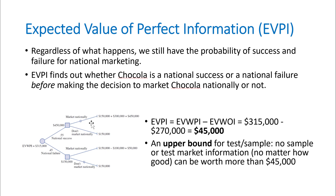Using the backward method on this tree, we take the larger value at each decision node. We get the expected value across both branches and call that the Expected Value With Perfect Information, or EVWPI. Subtracting EVWOI gives us $45,000 — that's EVPI. This means $45,000 is the maximum we would ever pay for any test market, even one giving us perfect information about what's going to happen. No test market information is worth more than $45,000, making EVPI the upper bound for any sample information value.